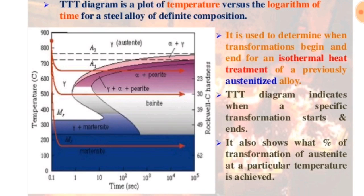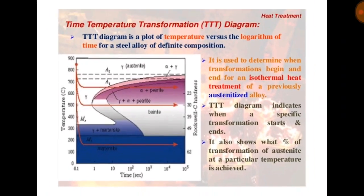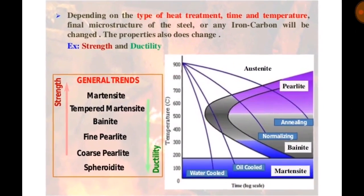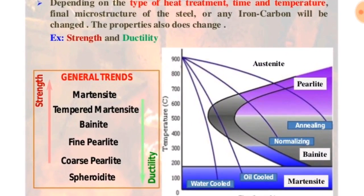It also shows what percentage of transformation of austenite at a particular temperature is achieved.